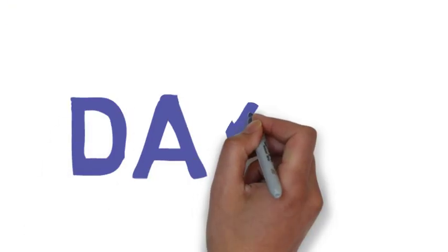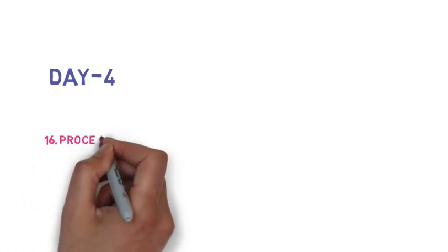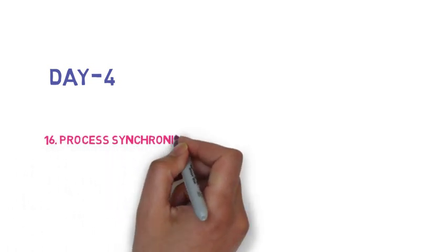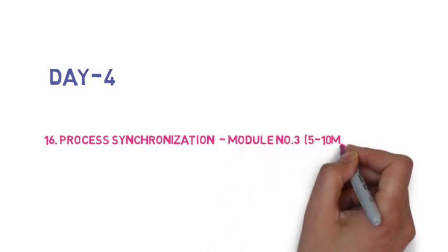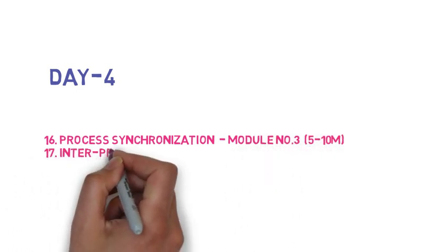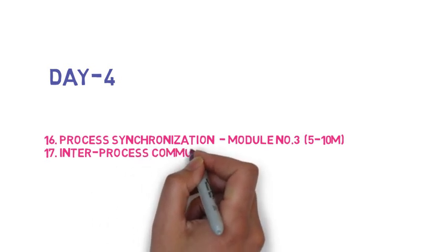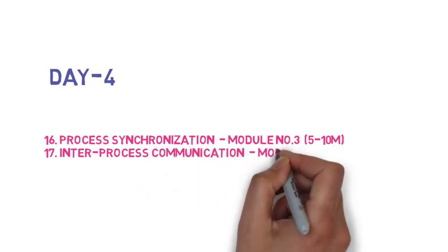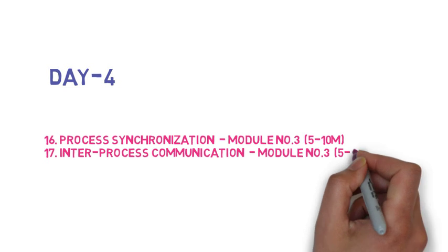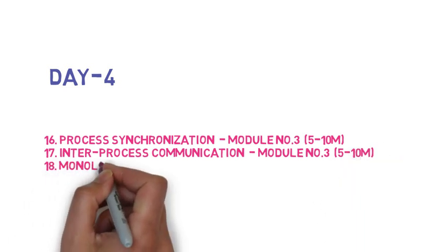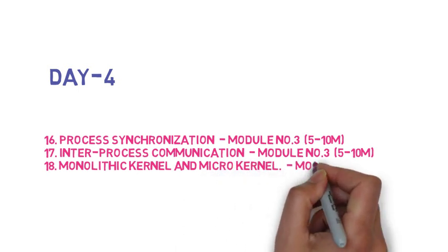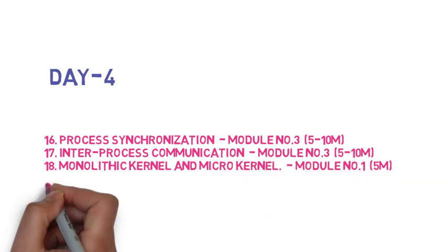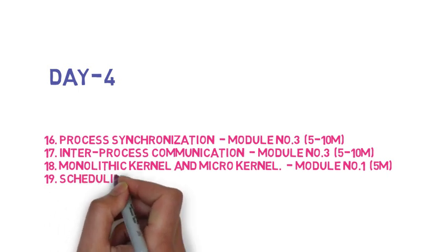For Day 4, the fifteenth question is: what is the effect of page size on the performance of an operating system — 5 marks. The sixteenth question is process synchronization — 5 to 10 marks. The seventeenth question is inter-process communication — also 5 to 10 marks. The eighteenth question is: compare monolithic kernel and microkernel — 5 marks.